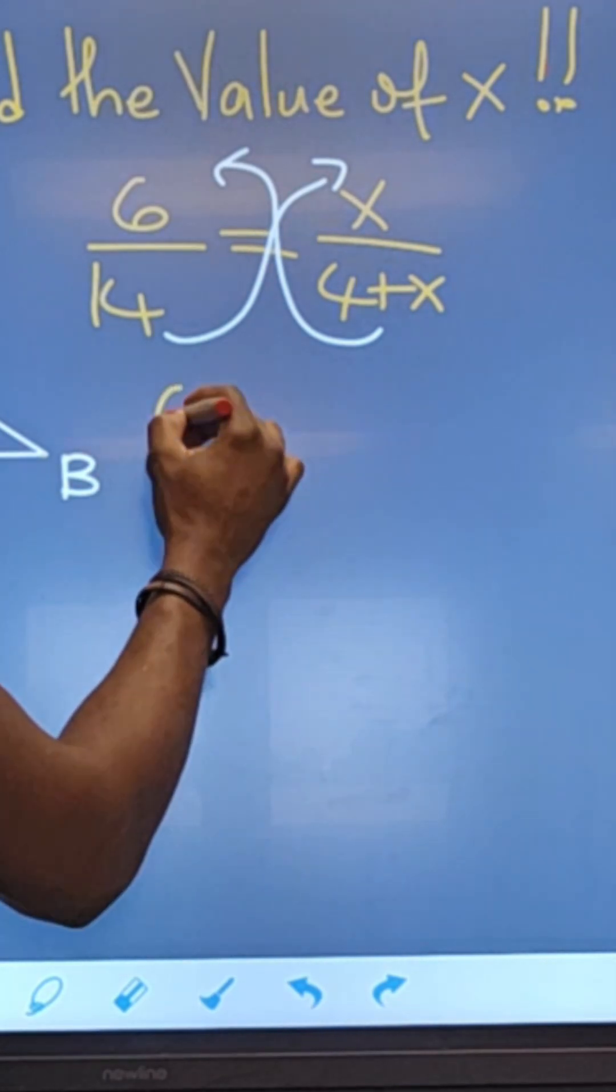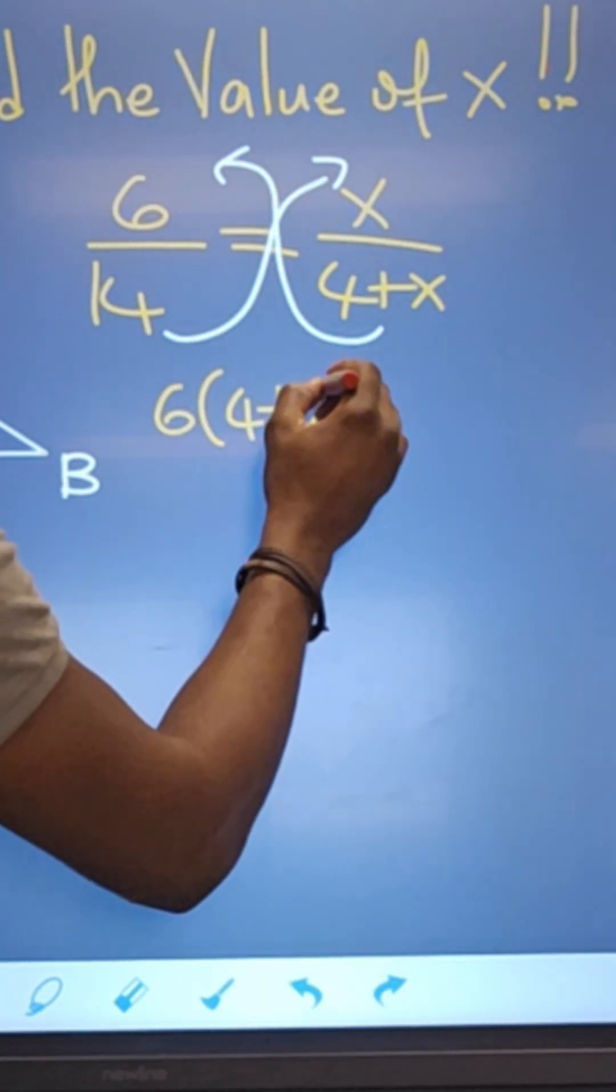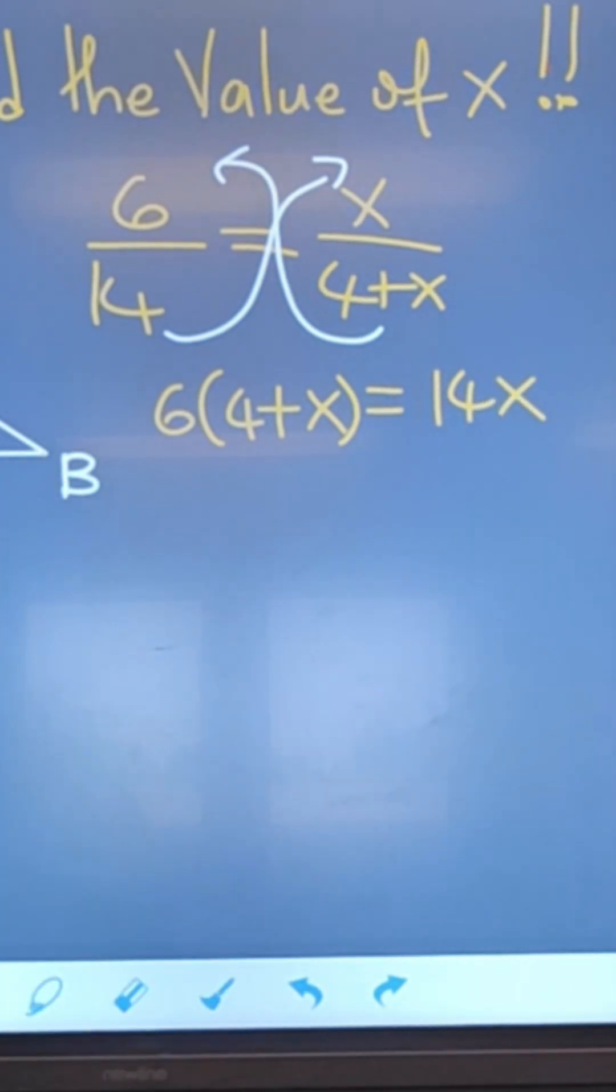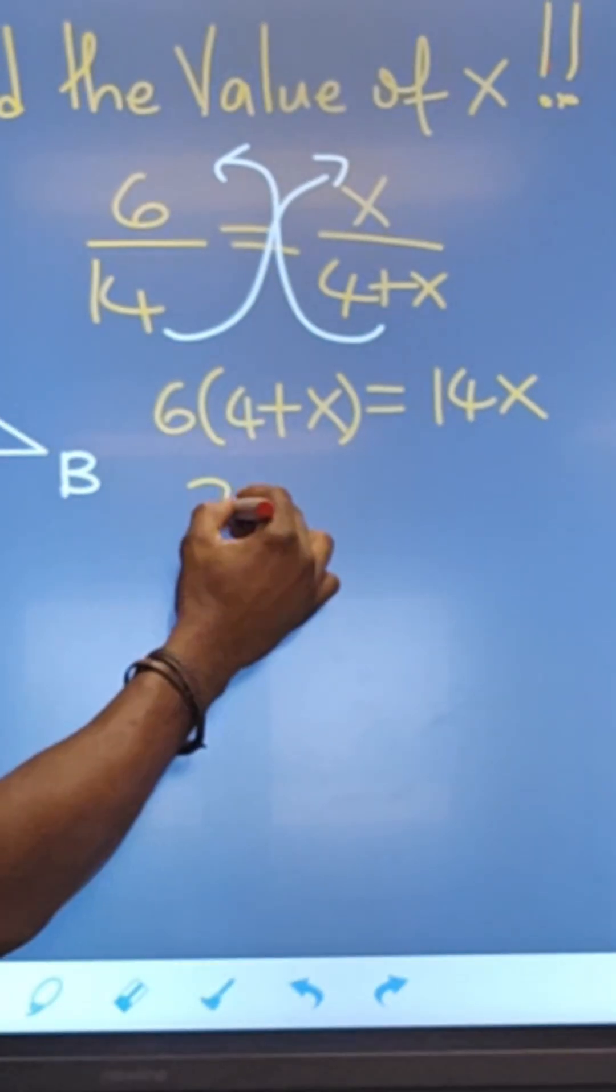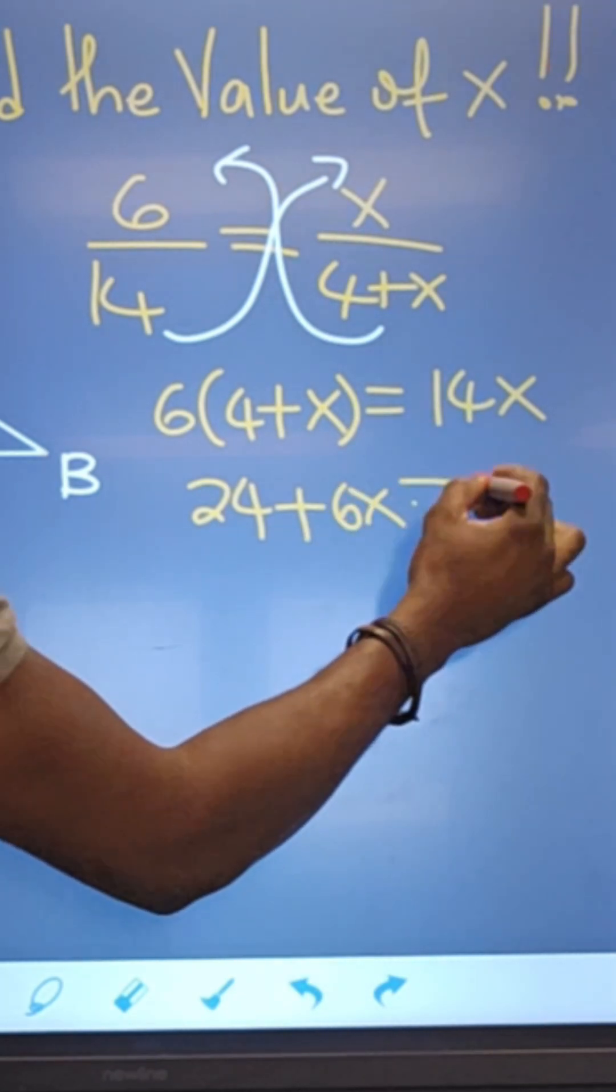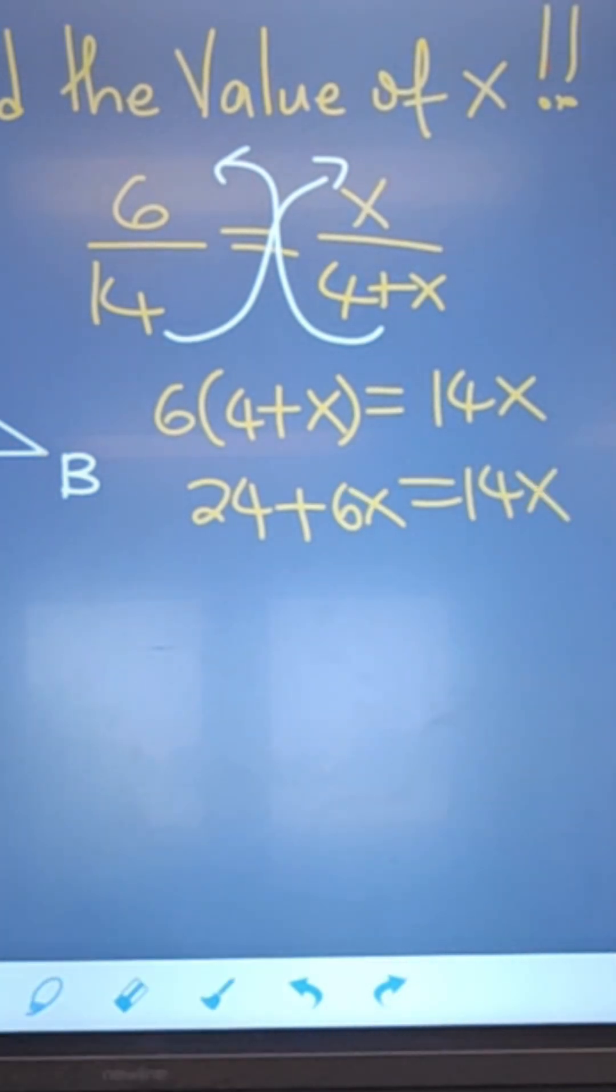So 6 times 4 plus X is equal to 14X. And then we simplify: 6 times 4, this is 24. This gives me 6X, so this is equal to 14X.